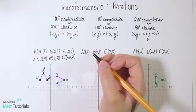This time we're going to go 270 degrees counterclockwise, or 90 degrees clockwise — just moving one space over this way. The rule is (x, y) becomes (y, -x): we flip the x and y and the x becomes negative in the back. A becomes A prime: the y comes forward, the x goes to the back and becomes negative. Same process for B prime and C prime — y comes forward, x goes to the back and flips sign.